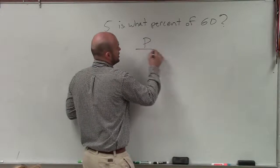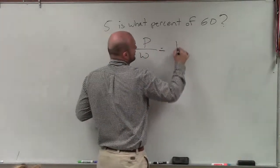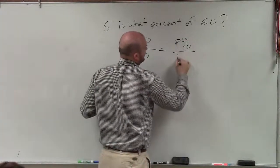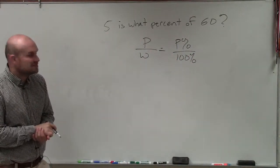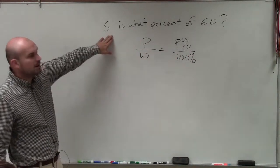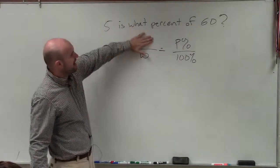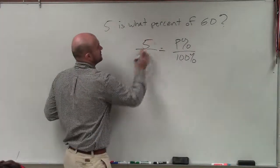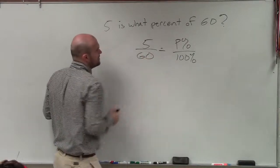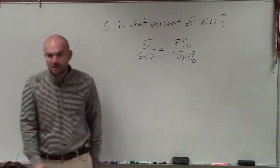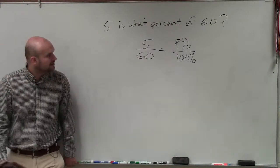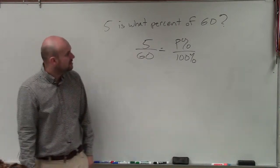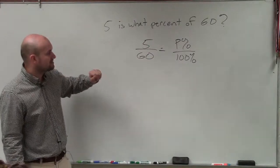So if we have part over whole equals percentage parts over 100%, we're obviously trying to figure out what is my percentage that makes the part of 5 is what percent of 60. So 5 is going to be my part, 60 will be my whole, and we'll just solve for my percentage part, which I'll just leave as p because I'm getting a little bit quicker and just using p for my representation.